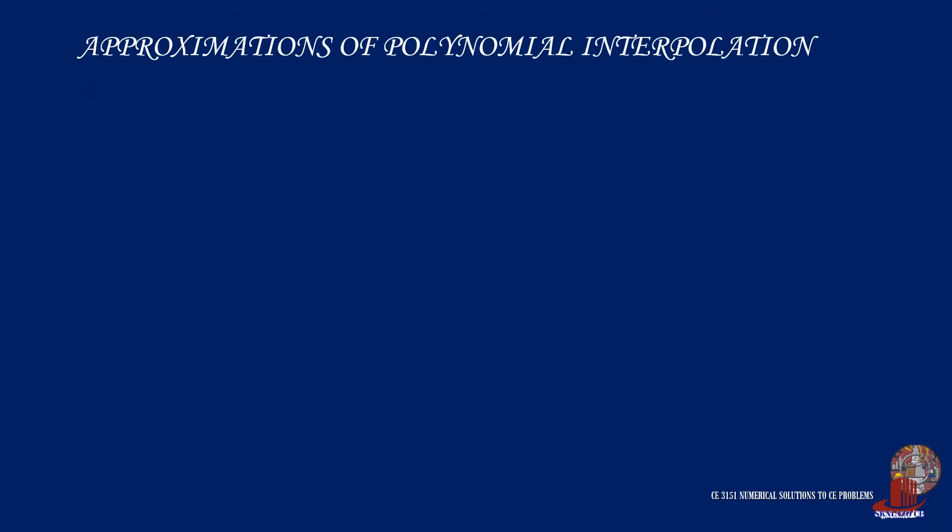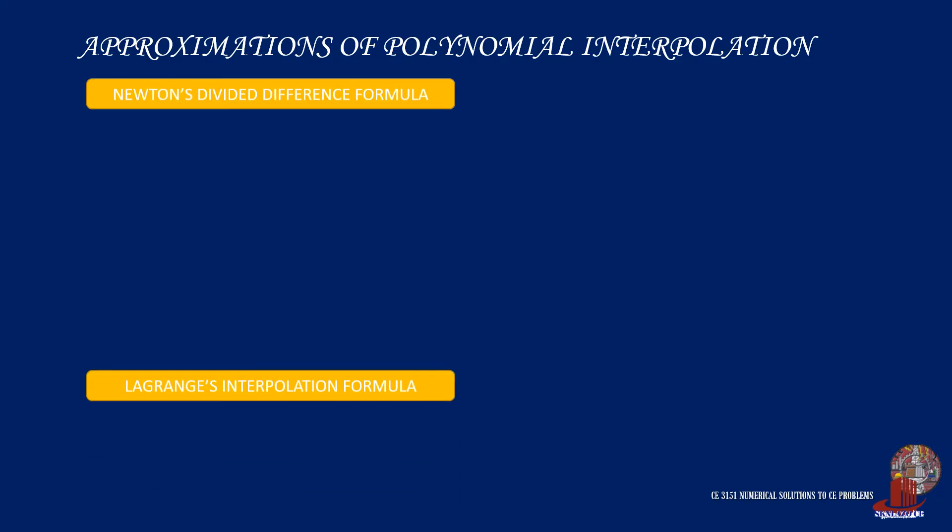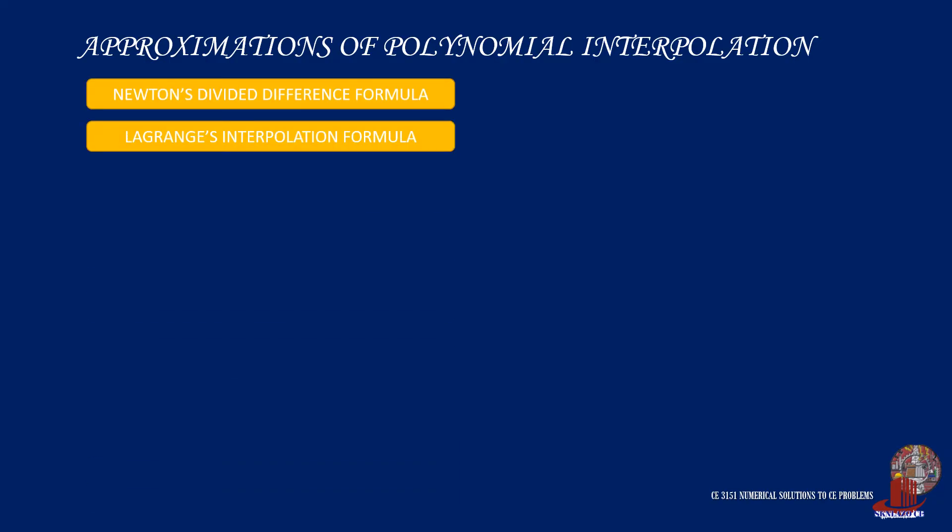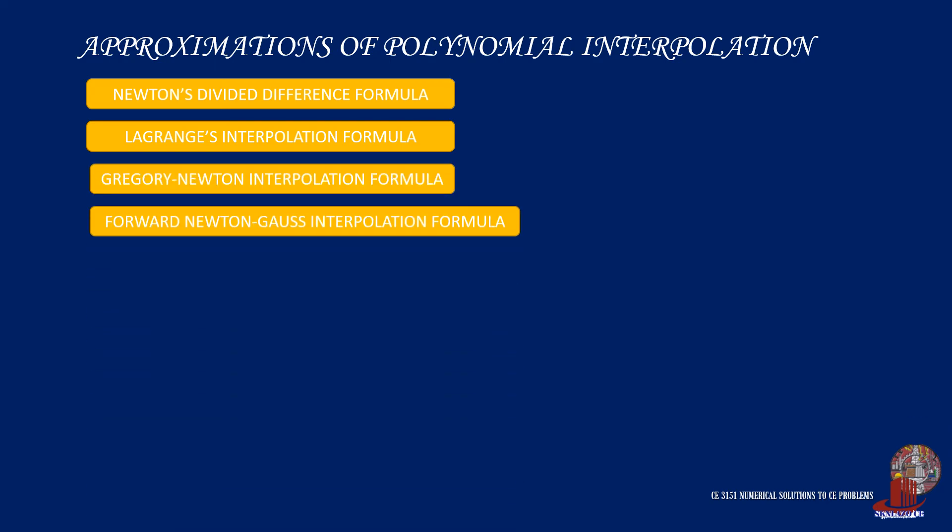Numerical solutions to polynomial interpolations are possible through Vandermonde matrix in monomial basis. However, in the course, we deal more on approximations. The different methods on approximating polynomial interpolation are Newton's divided difference formula, Lagrange interpolation formula, Gregory Newton interpolation formula, Forward Newton-Gauss interpolation formula, and Sterling's interpolation formula.